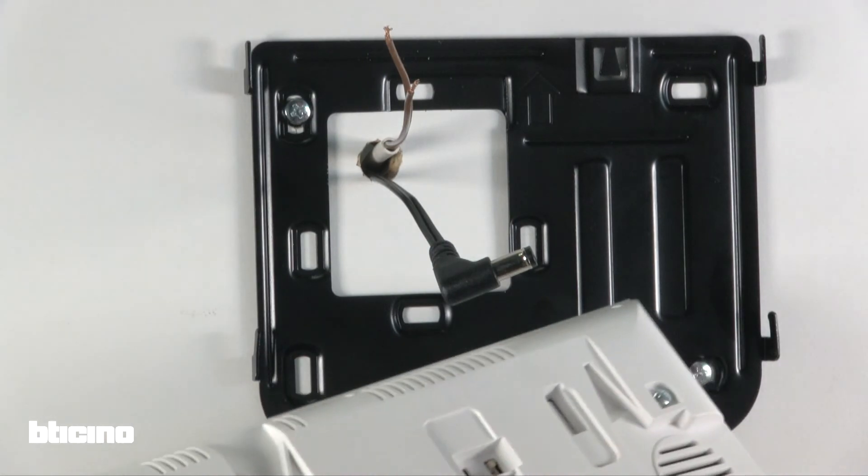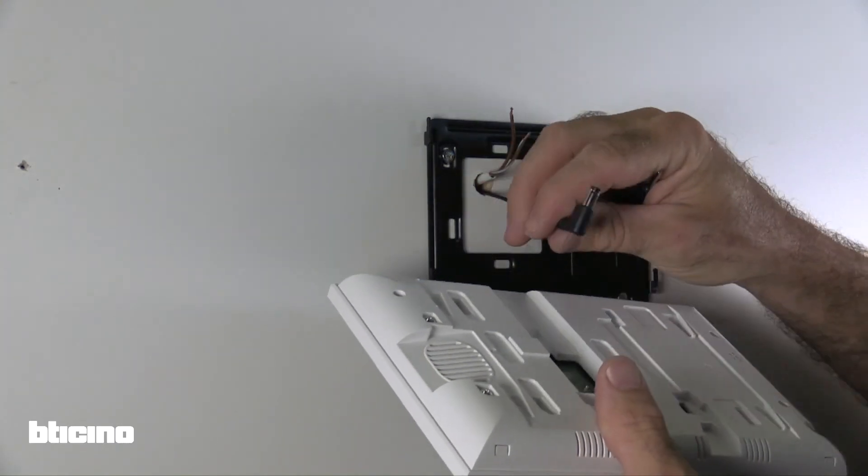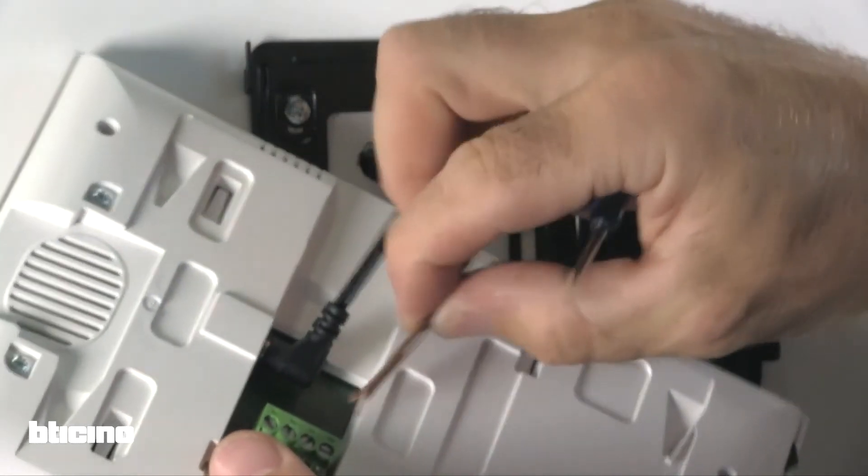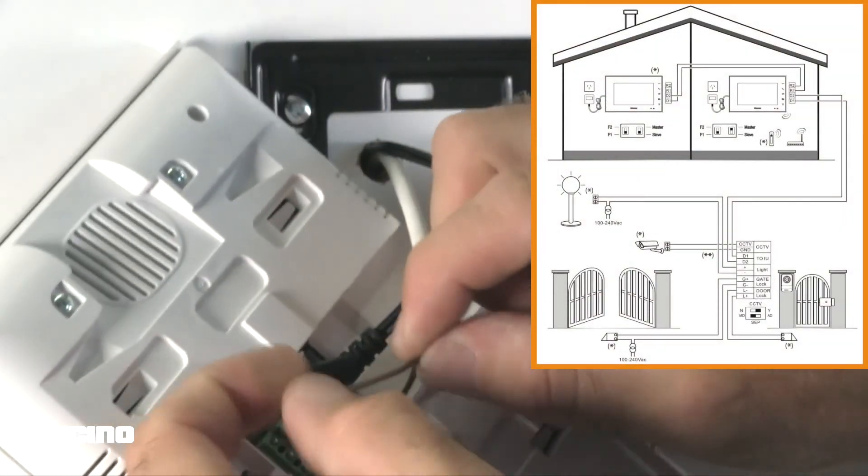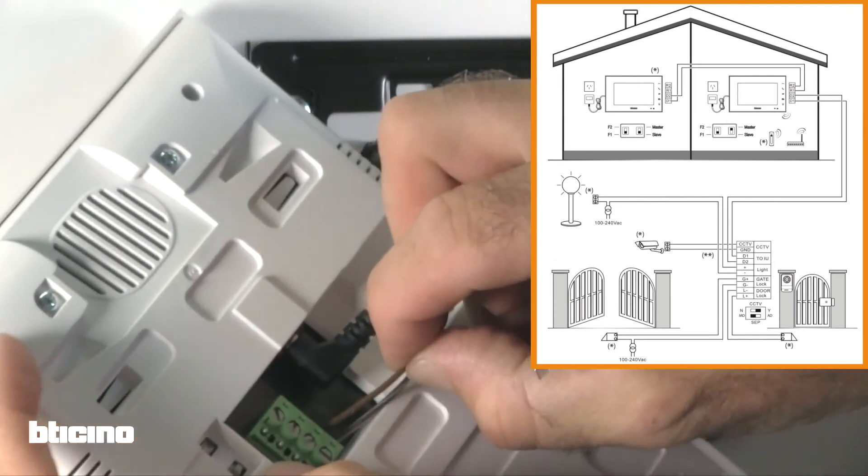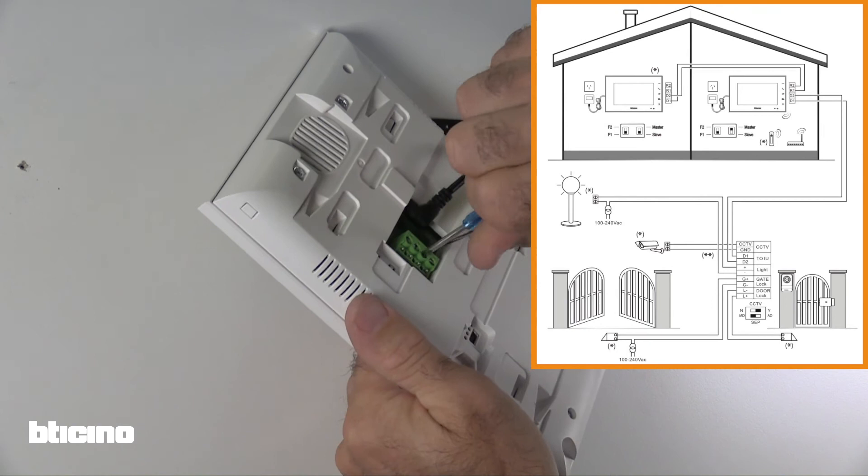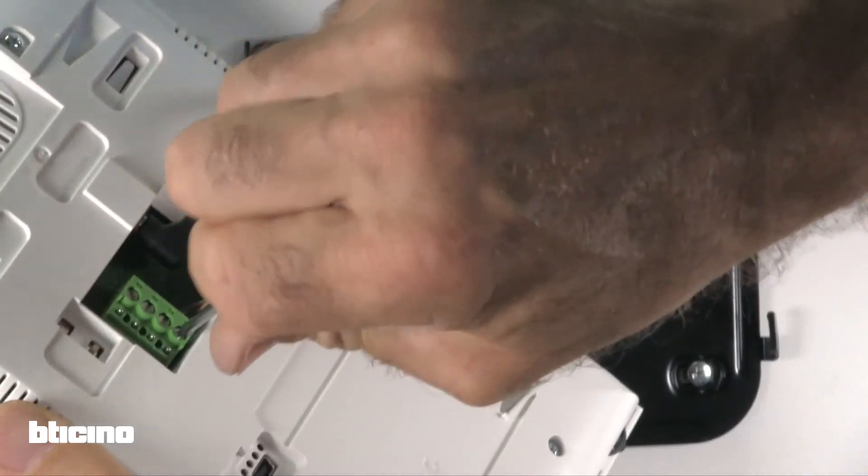Now, let's connect the internal monitor by inserting the 90 degree power plug into its socket. Using the wiring diagram found in the manual, connect the wires coming from the external unit to the D1, D2 terminals located on the green terminal of the internal unit.